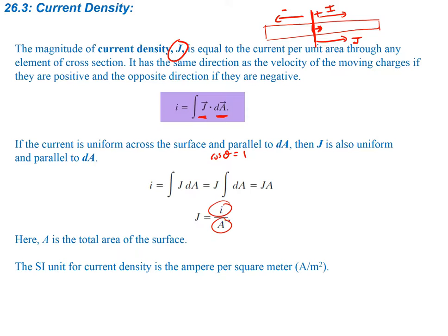A is just the total area of the surface of the cross-section. The SI unit for current density is amperes per square meter.